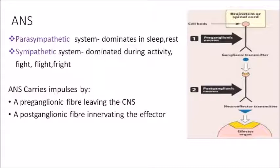Whether it be sympathetic or parasympathetic, the system works like this: there is a preganglionic neuron arising from the brain or spinal cord. This neuron, with the help of a neurotransmitter, communicates with the postganglionic neuron. The postganglionic neuron then communicates with the effector organ using another transmitter. The ganglion is an important part of this system.